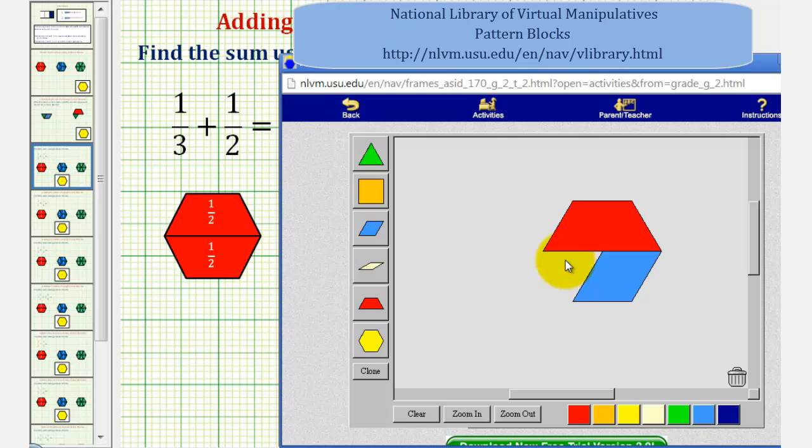First notice how the sum is going to be less than one because this is less than one yellow pattern block, which is equal to one whole.